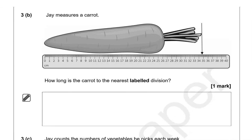Jay measures a carrot. How long is the carrot to the nearest labelled division? The arrow is pointing between 34 and 35 centimetres, and it is closer to 35. 'Labelled' means the numbers given to us on the ruler, so the answer is 35 centimetres.